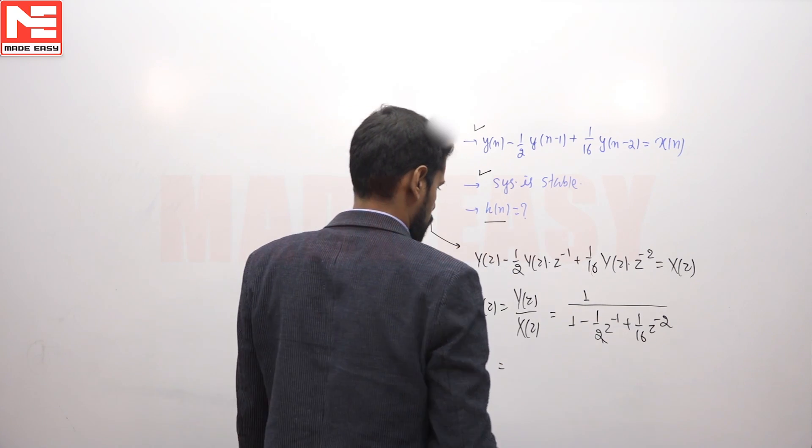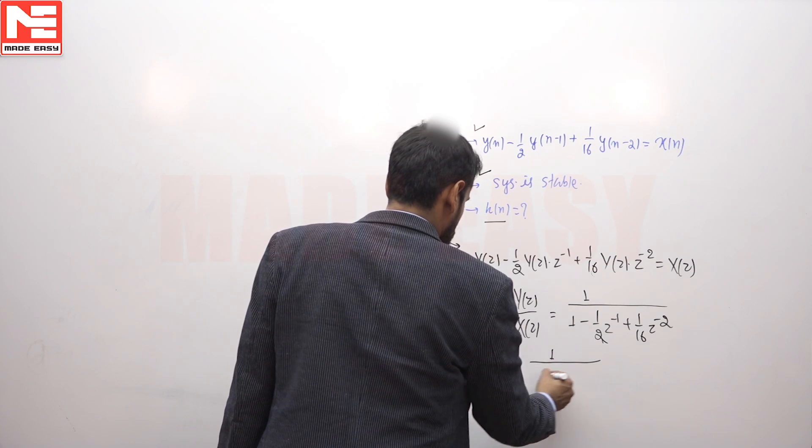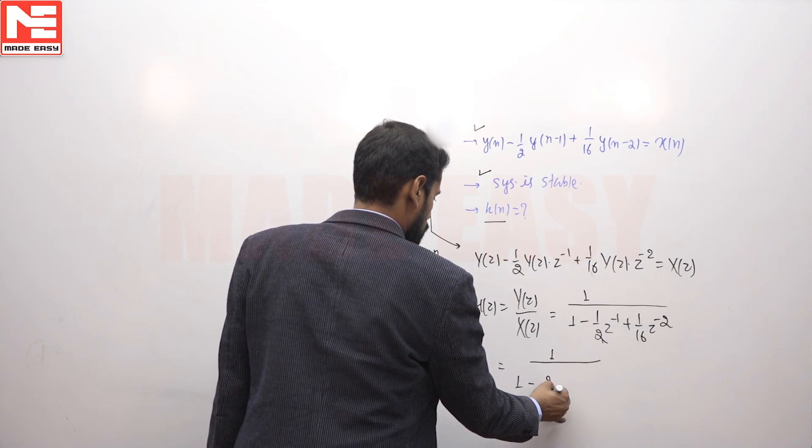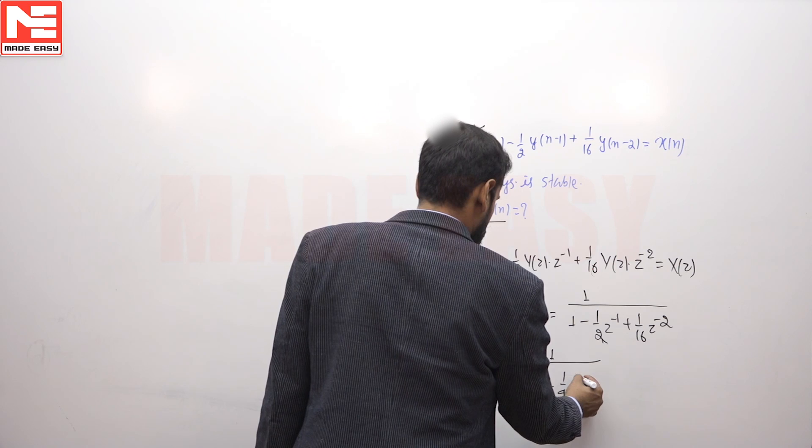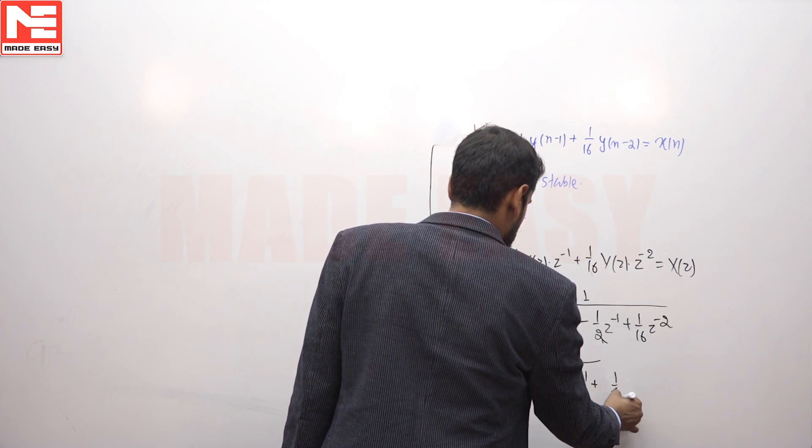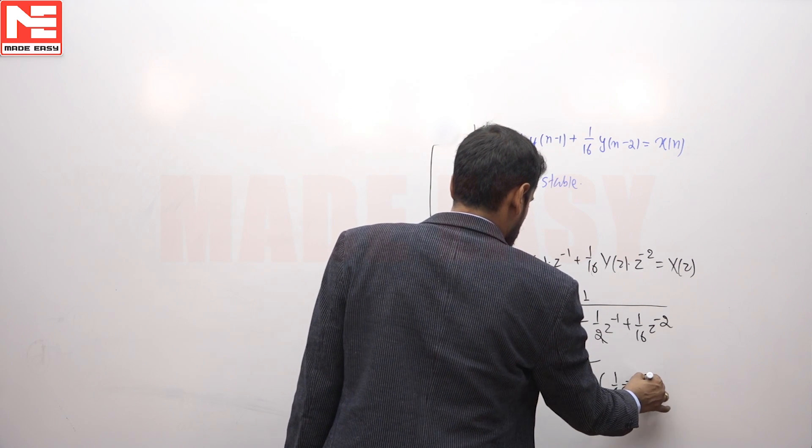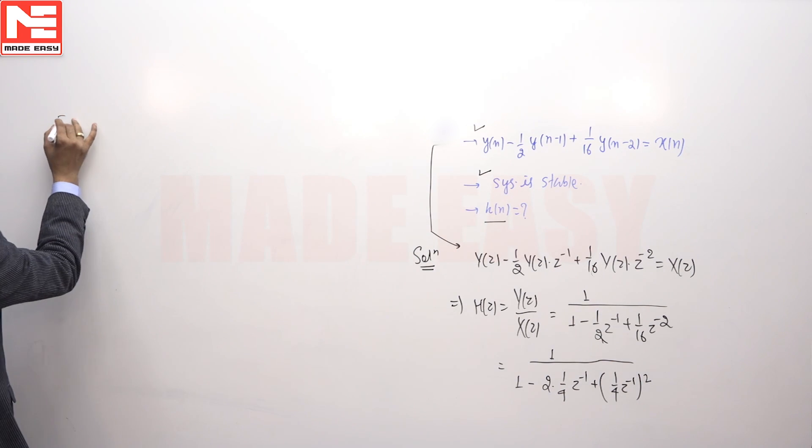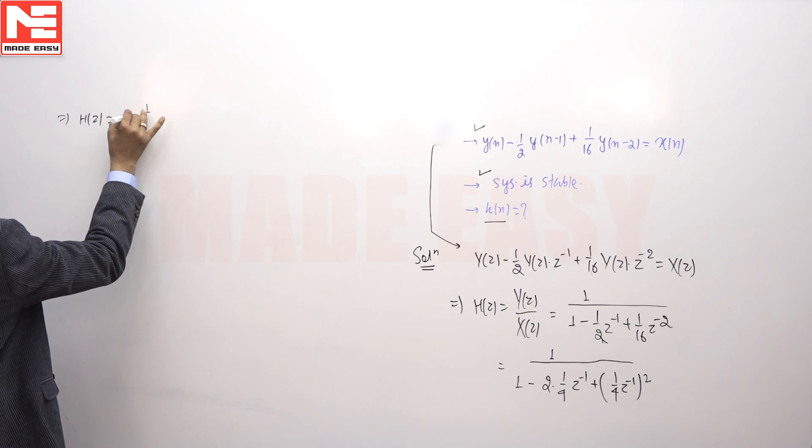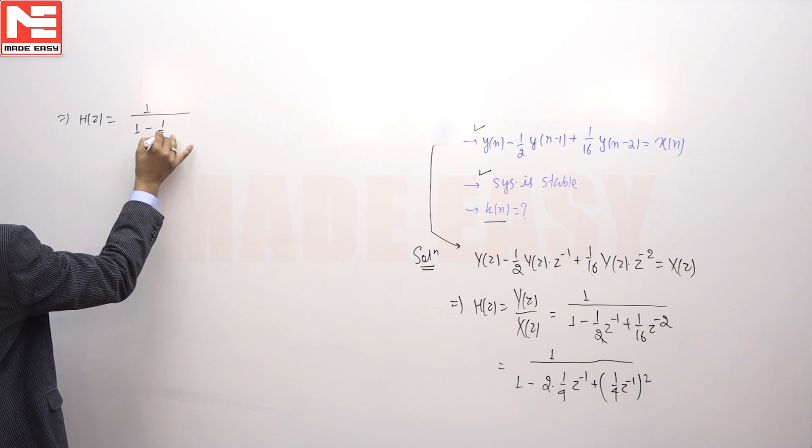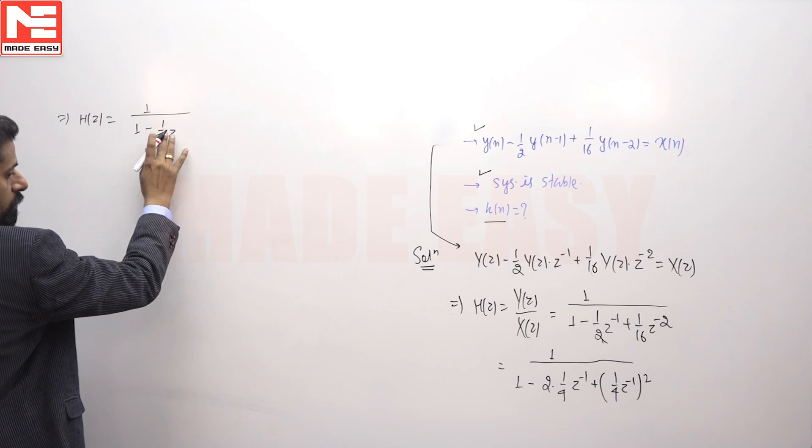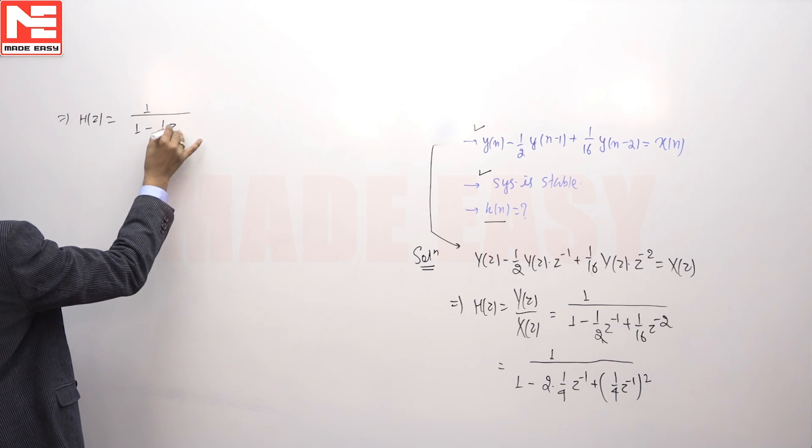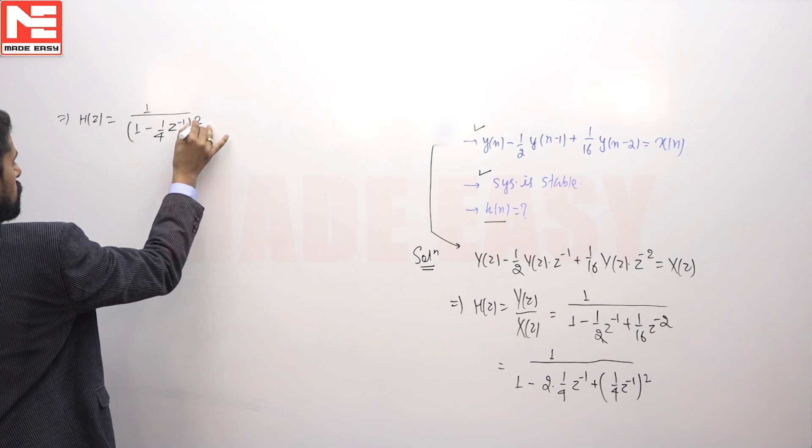We can write this as 1 upon 1 minus 2 into 1/4 z inverse plus 1/4 z inverse whole square. So H(z) will be equal to 1 upon (1 minus 1/4 z inverse) whole square.